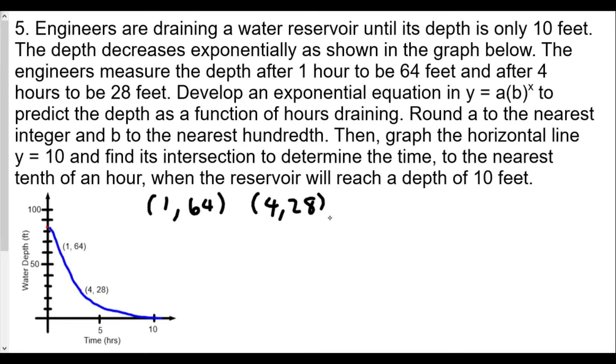Here we go. We'll begin with our first equation where x and y are (1, 64). We'll use the form: 64 = a times b to the first power. Then we'll come up with our second equation where x is 4 and y is 28.